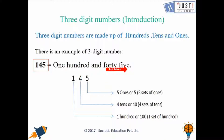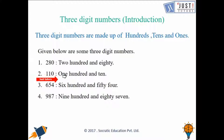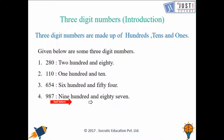Now let's work out similar examples. This number has two hundreds, eight tens, and zero ones — therefore this number is two hundred and eighty. Similarly, this number is one hundred and ten. This number is six hundred and fifty-four. And this one is nine hundred and eighty-seven.